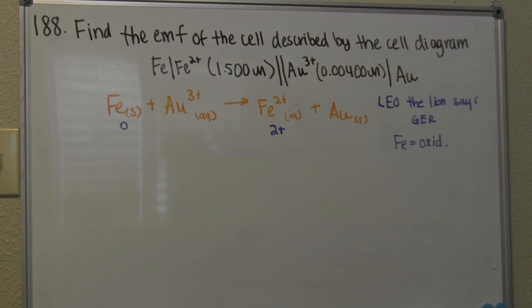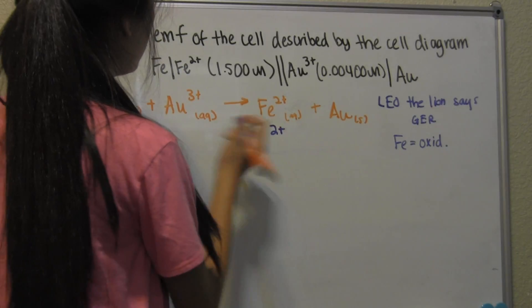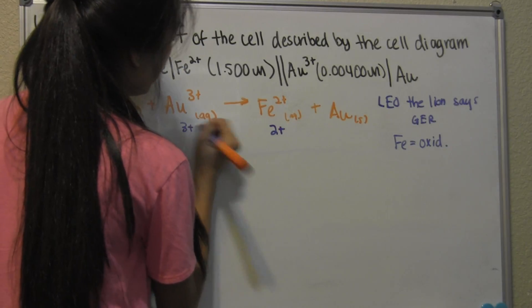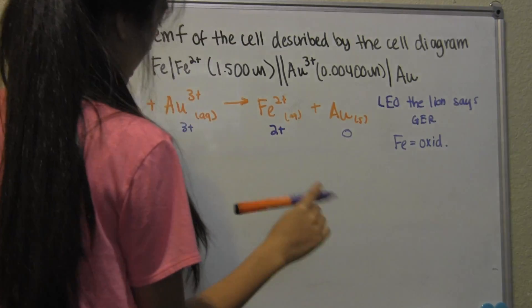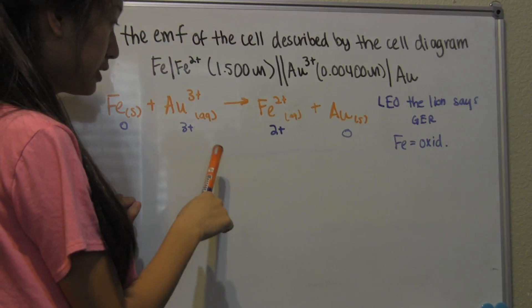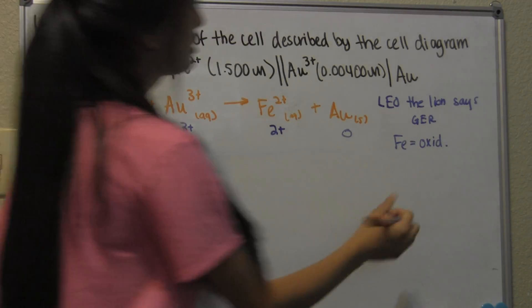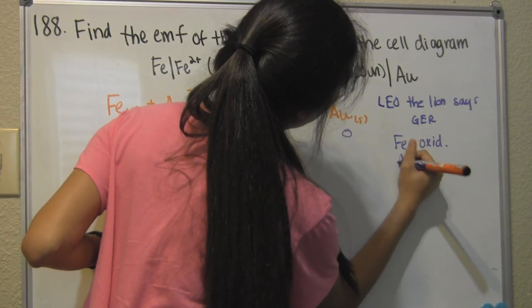Now we can figure out that Au goes from 3+ to 0. So in total, it's gaining three electrons. We think of GER. Au, gain of electrons equals reduction.